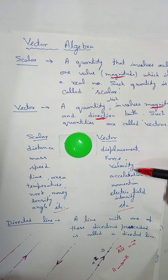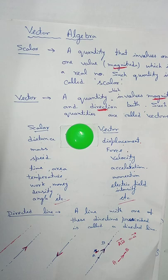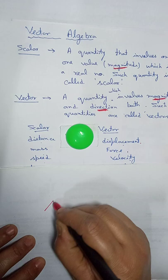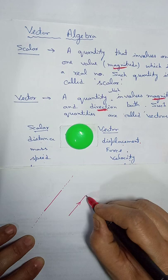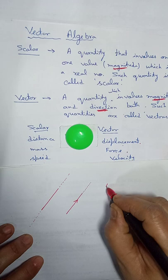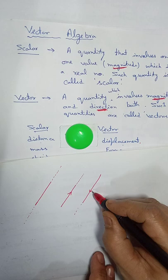Now one more thing you have to understand: what is a directed line. First understand what is a line — a line can be extended in both directions. But when we put one arrow here, this line always goes in that one direction. When we put an arrow like this, it means the line goes in that direction only.